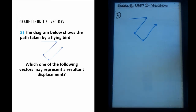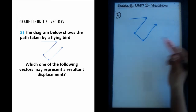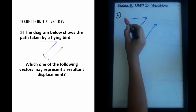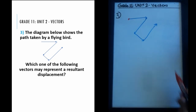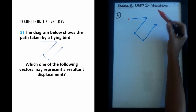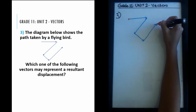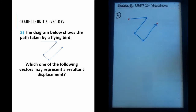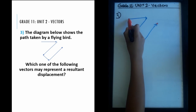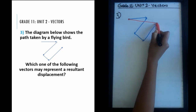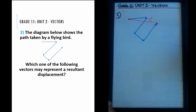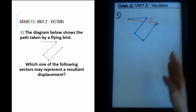Since no numbers are given, we find the resultant displacement graphically. Displacement is the shortest distance from the initial to the final point. For vectors, the initial point is the tail of the first vector and the final point is the head of the last vector. All we do is connect this tail to that head — that gives our resultant displacement.